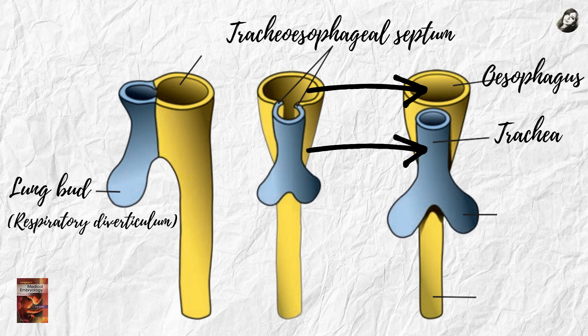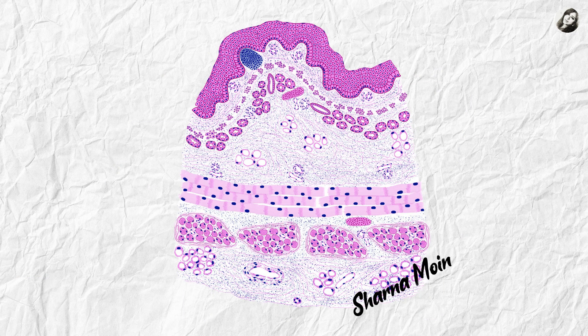The tracheoesophageal septum ultimately separates the trachea from the esophagus. Now you have a separate pathway for your respiratory system and a separate digestive tract behind. There is something important to remember: we know there are different layers in the esophagus.